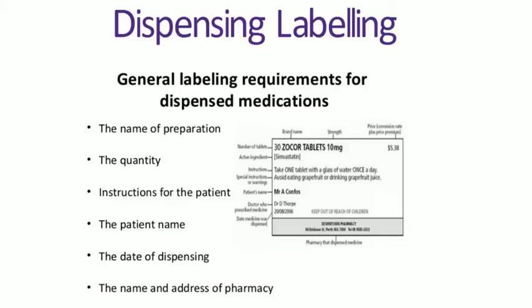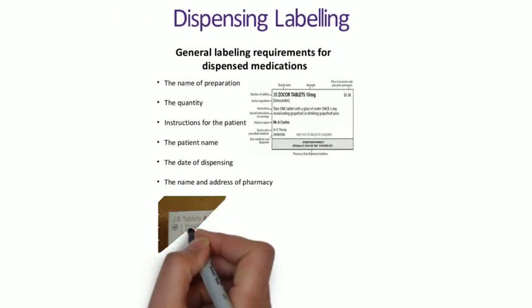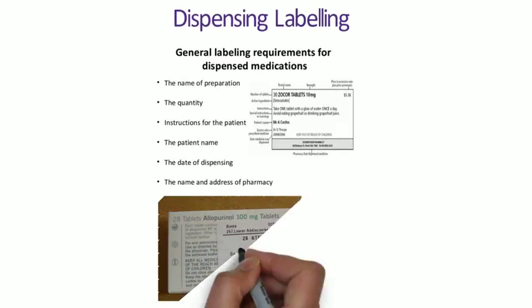A pharmacy dispensing label needs to include the name of the patient, the name and address of the pharmacy, the date of dispensing, the name of the product, directions for use, precautions related to use of the product, and the statement to keep it out of the reach and sight of children. The quantity is not a legal requirement but is good practice.